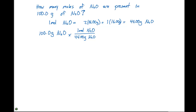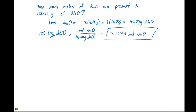Using the numerator-denominator form, we can say 100.0 grams of N2O times 1 mole of N2O over 44.00 grams of N2O. We cancel out the grams, we're left with moles of N2O, and this gives us 2.273 moles of N2O. Keeping in mind the rules for significant figures, we have four significant figures throughout, so 100.0 grams of N2O is 2.273 moles.